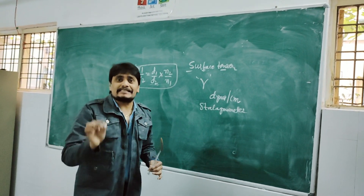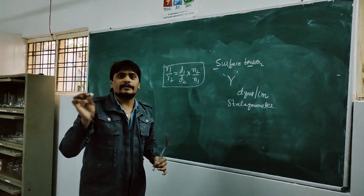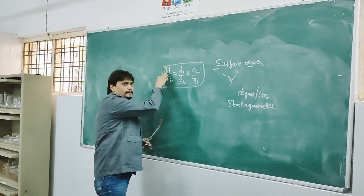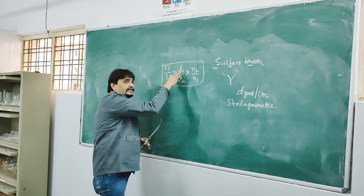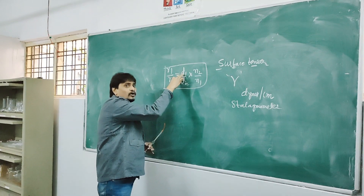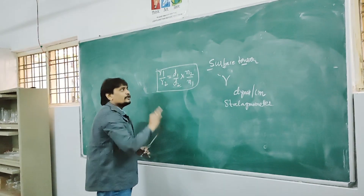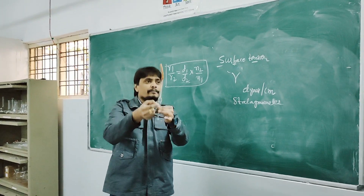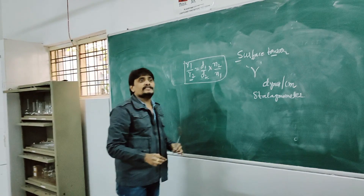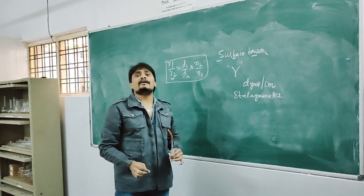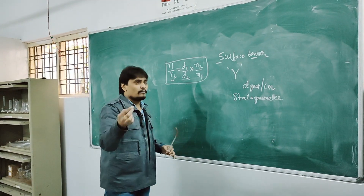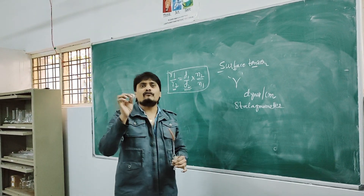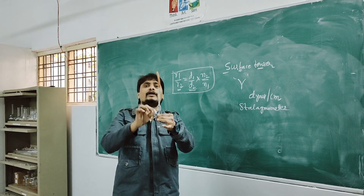All the variables with subscript 1 correspond to the standard, which is distilled water. γ1 is the surface tension of distilled water, D1 is the density of distilled water (approximately 1 g/cm³), N1 is the number of drops of distilled water from mark A to mark B. γ2 is the surface tension of the liquid to be determined, D2 is the density of that liquid, and N2 is the number of drops of that liquid from mark A to mark B.